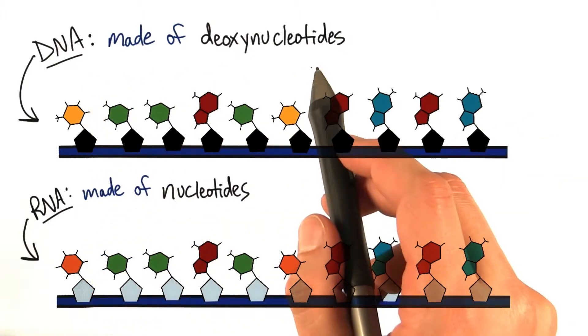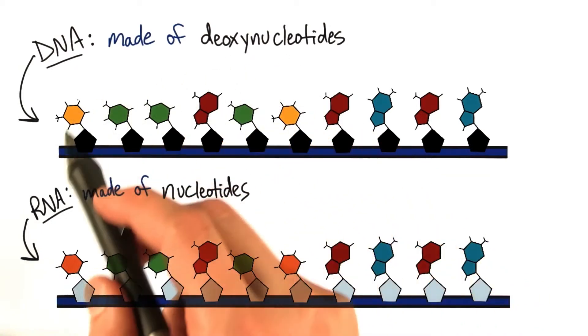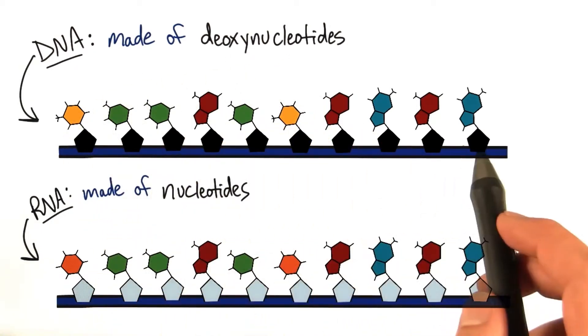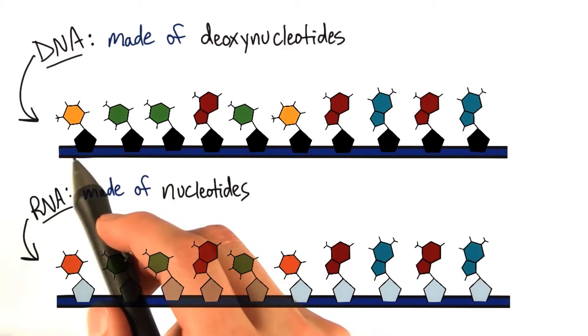While DNA is made of deoxynucleotides, because its ribosugar is missing an oxygen, and here the ribosugar is this black pentagon here.